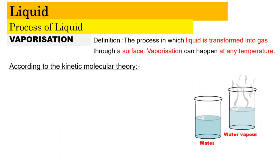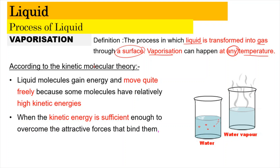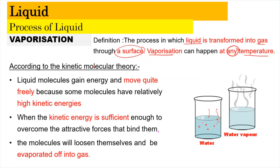Next is vaporization, which is the process in which a liquid is transformed into a gas through its surface. Vaporization can happen at any temperature — not necessarily at the boiling point. According to the kinetic molecular theory, liquid molecules gain energy and move quite freely because some molecules have relatively high kinetic energy. Some molecules move very fast and receive more energy than others. As a result, they can overcome the attractive forces that bind them and leave the surface as vapor.